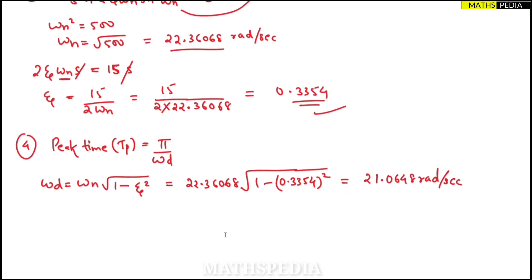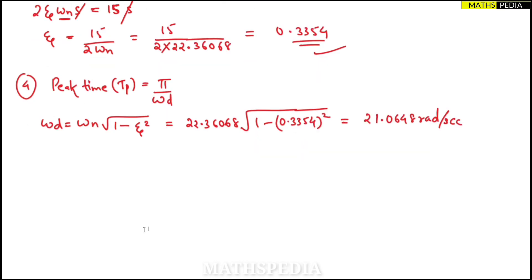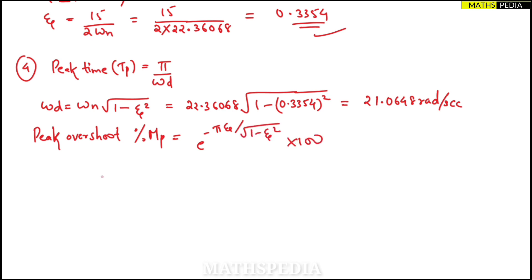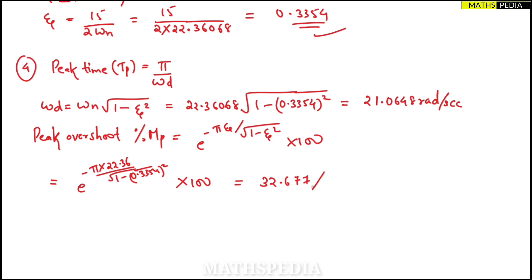Next we find peak overshoot, percentage Mp. The formula is: %Mp equals e to the power of (minus pi·zeta divided by square root of (1 minus zeta²)) times 100. Substituting zeta equal to 0.3354, we get %Mp equal to 32.677 percent.